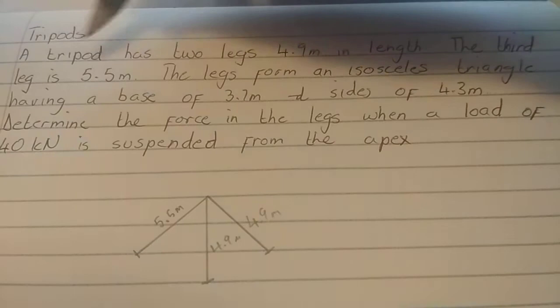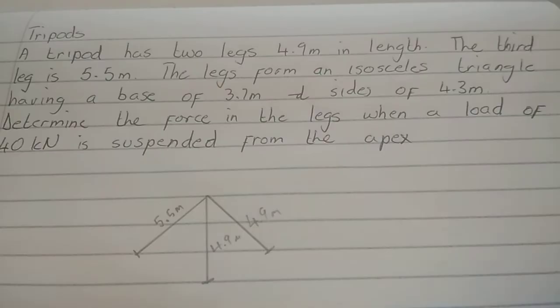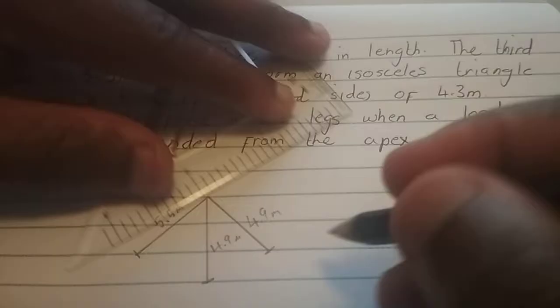The legs form an isosceles triangle having a base of 3.7. Now they're talking about this base, they're talking about the bottom. And this 3.7 is right there between these two legs.